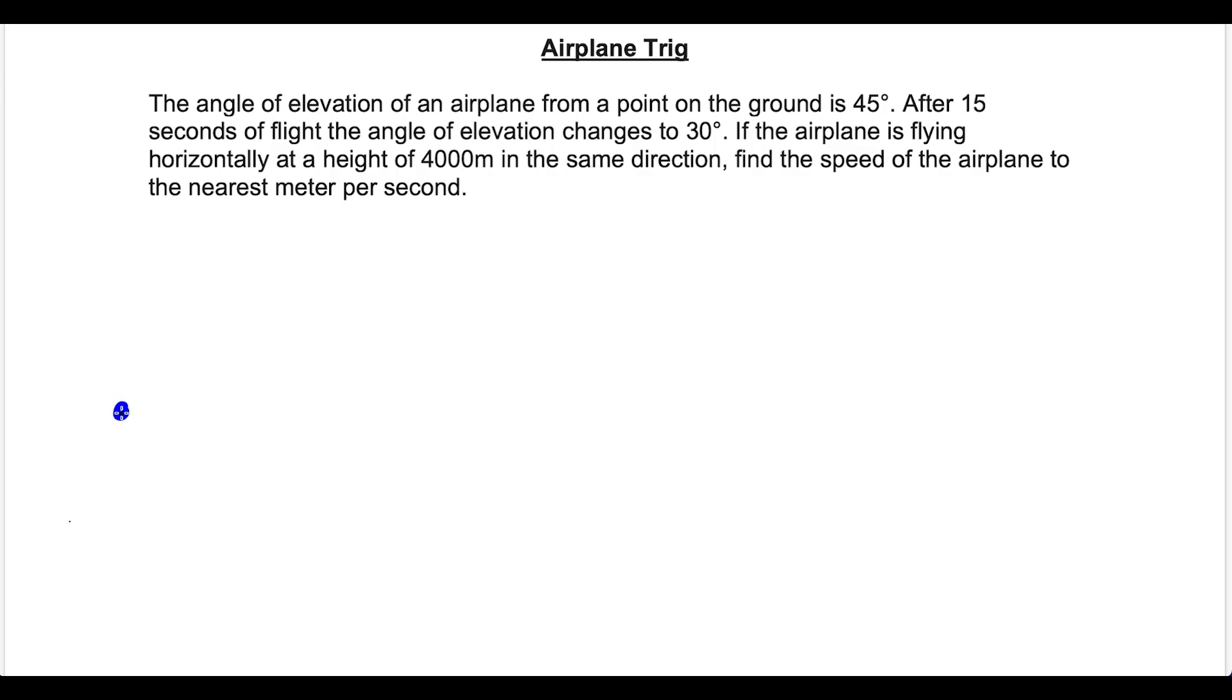Now the first thing I would do is just draw this out. We have a point on the ground and the plane is at a 45 degree angle to that point on the ground. So this is our 45 degree angle. This is the point on the ground that we're talking about and the plane is up here. I'm not a great artist and you don't necessarily have to draw a plane but there's our plane.